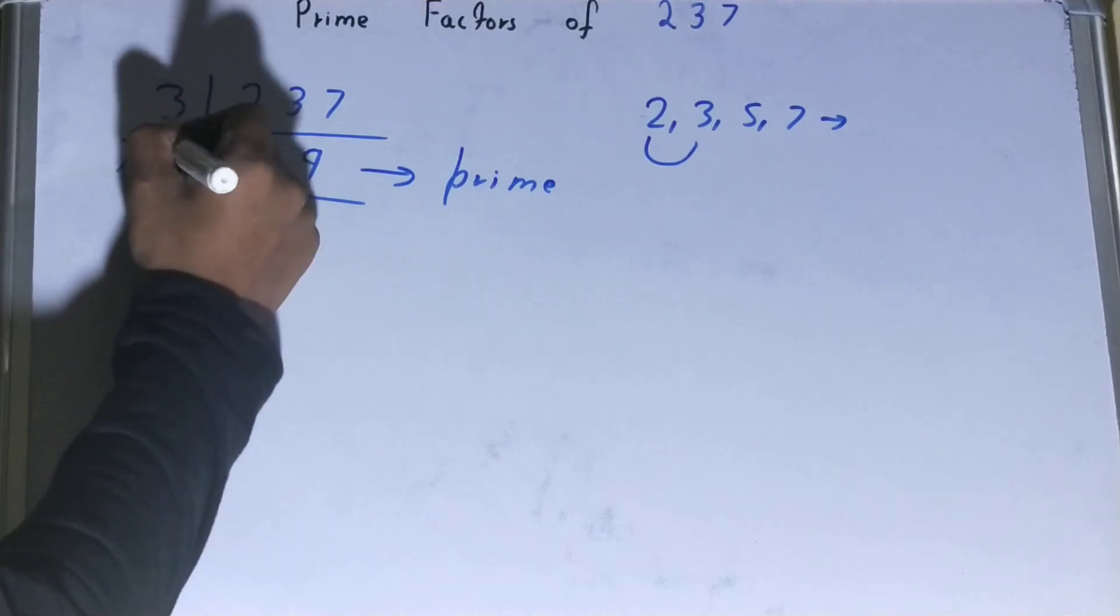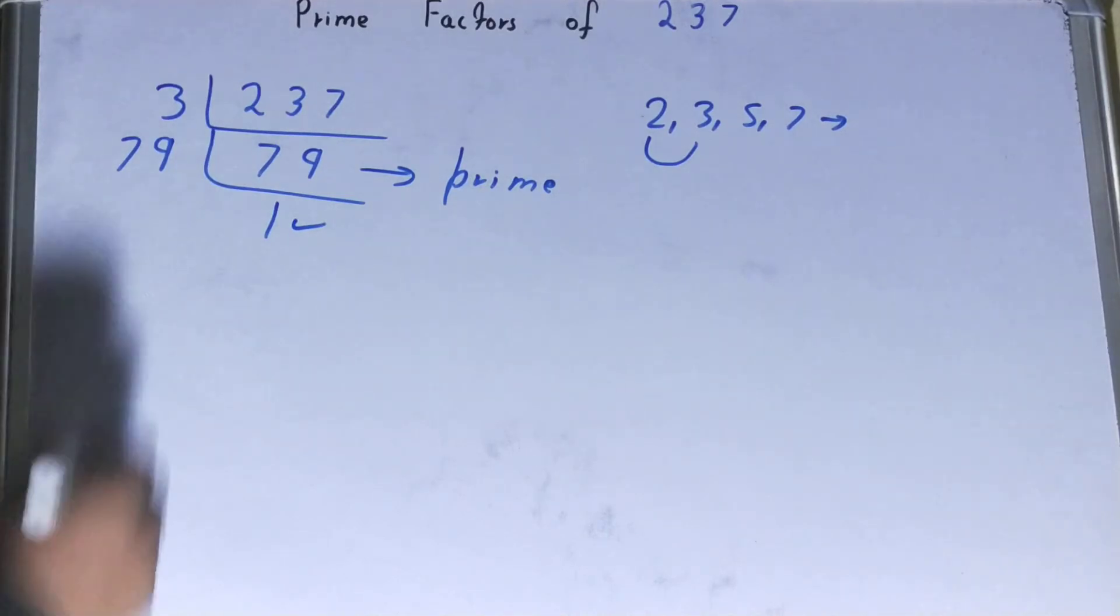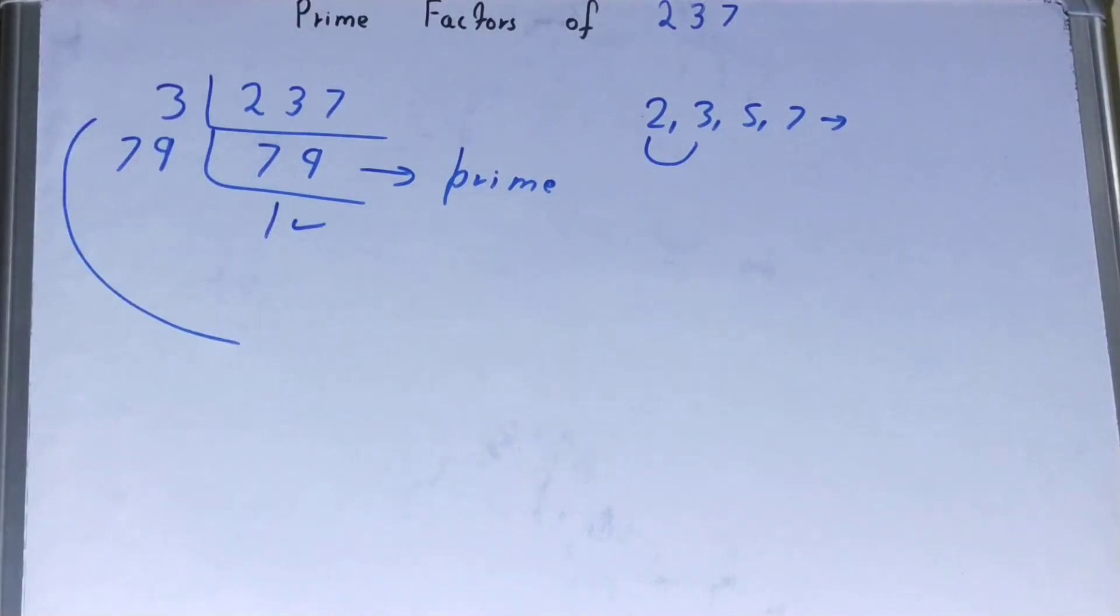Once you do so, you will be left with just 1. Once you are left with 1, the work is done. And whatever you have on the left-hand side will be your set of prime factors for the number 237.